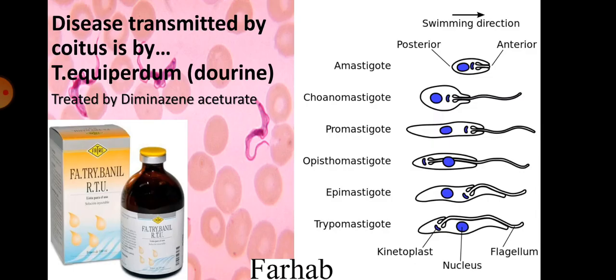A disease transmitted by coitus is dourine, caused by Trypanosoma equipardum. It is also known as Dourine disease and is treated by diminazine aceturate, available as Berenil. The main parts of Trypanosoma equipardum are the flagellum, nucleus, kinetoplast, and the adult stage is known as the trypomastigote.